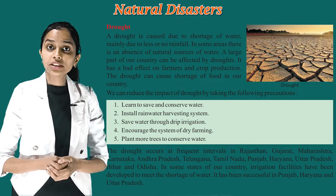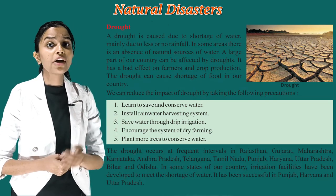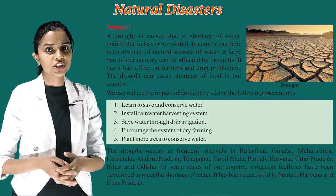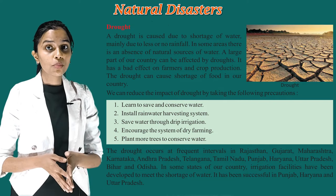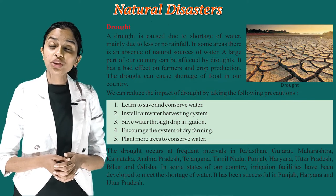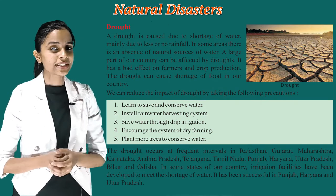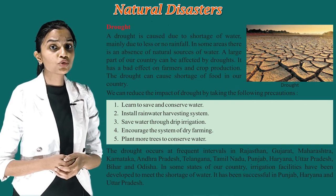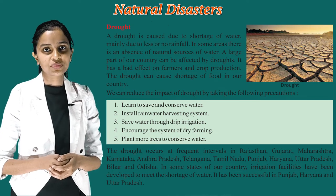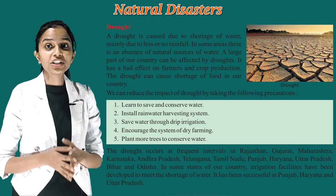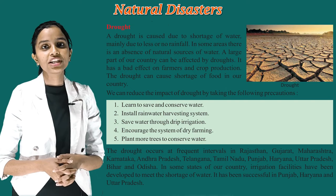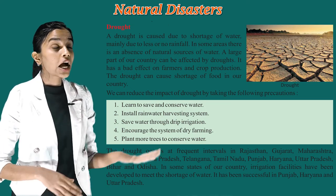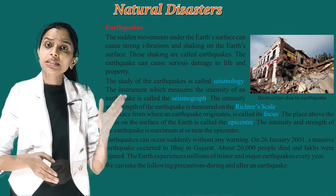Drought occurs at frequent intervals in Rajasthan, Gujarat, Maharashtra, Karnataka, Andhra Pradesh, Telangana, Tamil Nadu, Punjab, Haryana, Uttar Pradesh, Bihar, and Odisha. In some states, irrigation facilities have been developed to meet the shortage of water. This has been successful in Punjab, Haryana, and Uttar Pradesh. The next natural calamity is earthquake. The sudden...